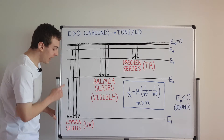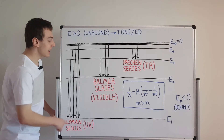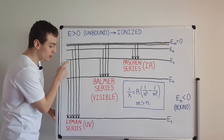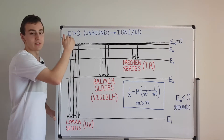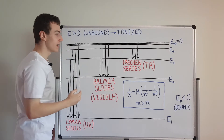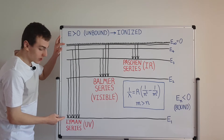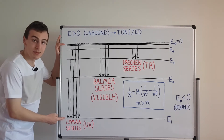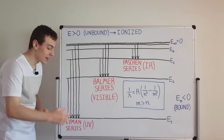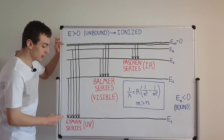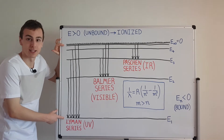The first transition in the Lyman series is m equals 2 dropping down to n equals 1. The next is m equals 3 dropping to n equals 1, then 4, 5, 6, 7, all the way up to infinity. The Lyman series converges to an energy value equal to the ground state energy E1.